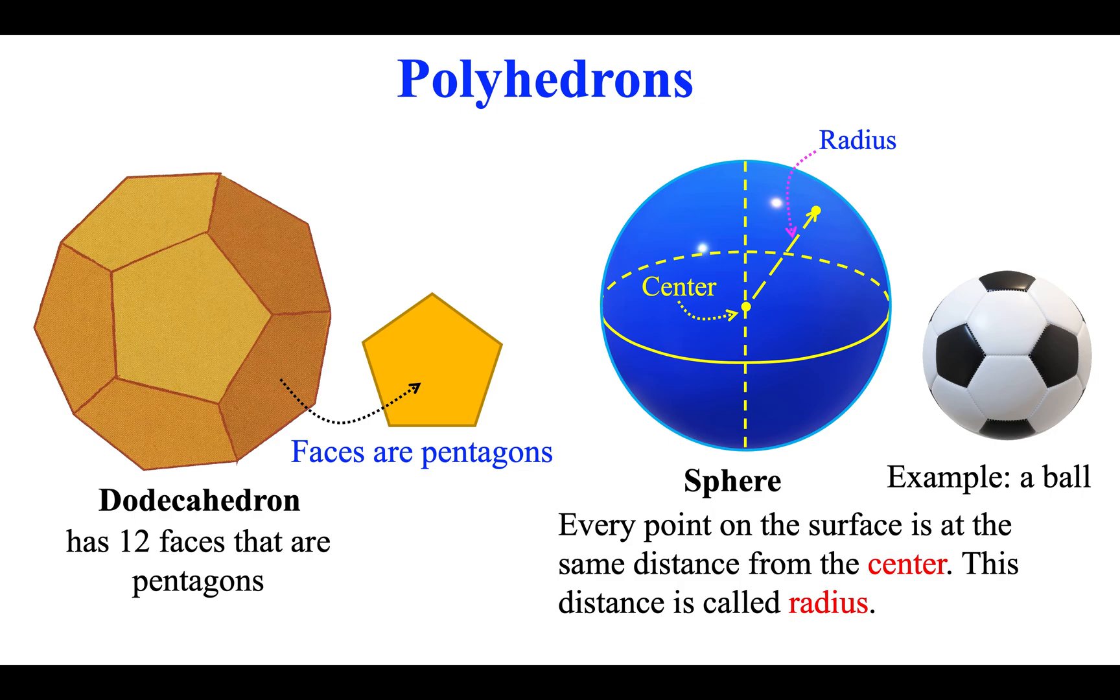Sphere. Every point on the surface is at the same distance from the center. This distance is called radius.